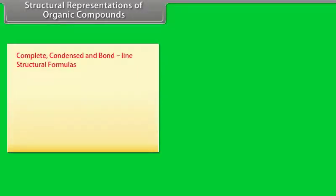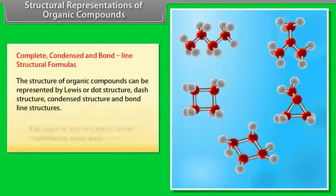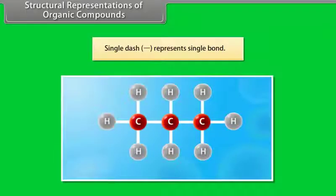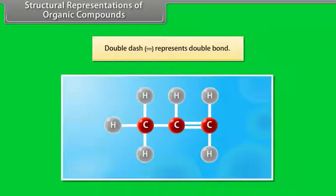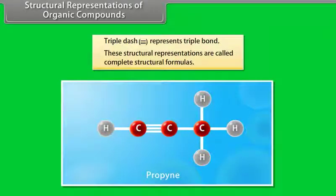Structural representations of organic compounds — complete, condensed, and bond-line structural formulas. The structure of organic compounds can be represented by Lewis or dot structure, dash structure, condensed structure, and bond-line structures. A single dash represents a single bond (e.g., propane), a double dash represents a double bond (e.g., propene), and a triple dash represents a triple bond (e.g., propyne). These are called complete structural formulas.